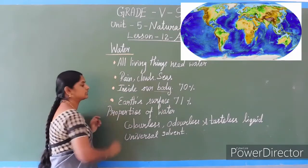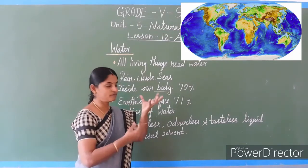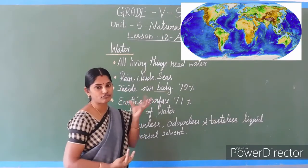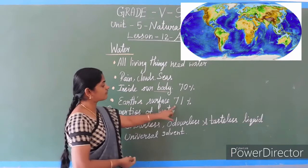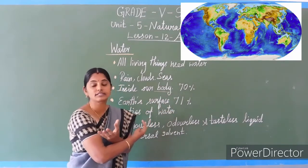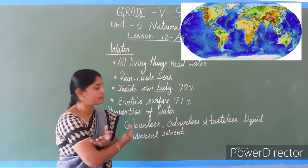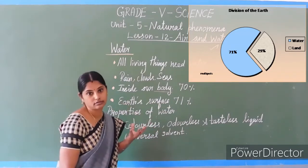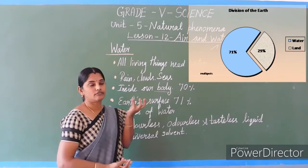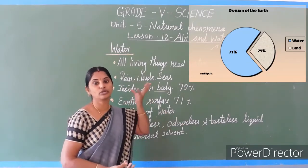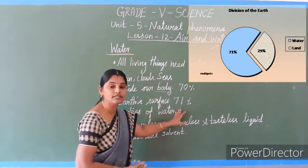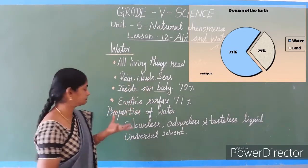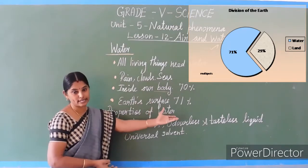Coming to the earth - oceans and seas cover most of the place on earth. 71 percent of the earth's surface is covered by water. That's why we call it the water planet - blue in colour. The land covers only 29 percent of the earth.